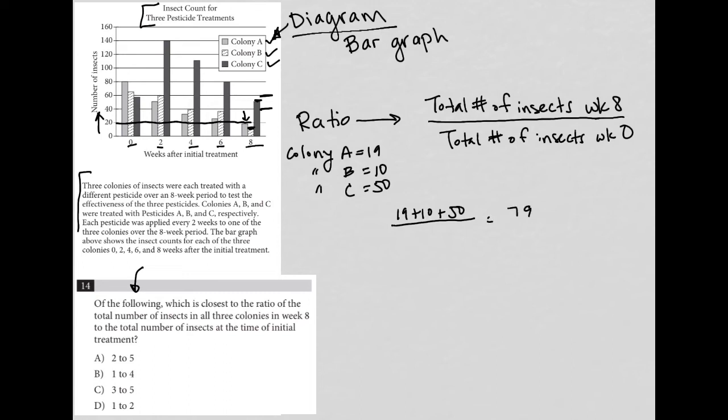And then for total number of insects at week zero, I look back to my bar graph and I just look here. So for colony A, it's exactly 80. So let's just do this. So it's 80. And then for colony B, we're above 60. Doesn't look like we're halfway to 70, though. So I'm going to call that 65.